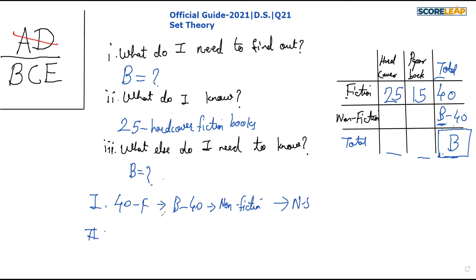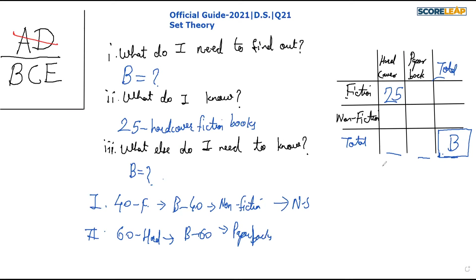Now let's check Statement 2. We erase the information from Statement 1 since it's an independent statement. Statement 2 says that 60 of the b books are hardcovers and the rest are paperbacks — so 60 hardcover and b minus 60 paperbacks. This is the same situation as Statement 1: we don't have the two values independently, and everything is still in terms of b. So Statement 2 alone is also not sufficient, and we cross out B.